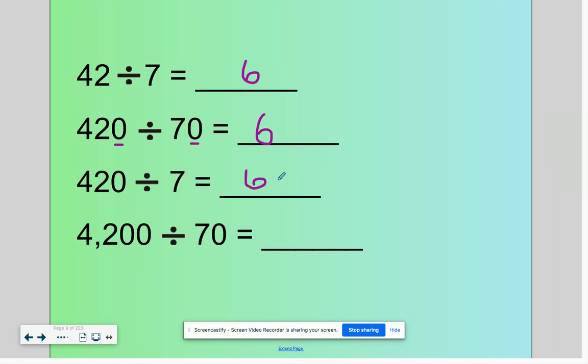But for this next problem our answer is 60. And our last problem, our answer is also 60. 6 times 7 is 42, one zero, one zero, and that gives us our two total zeros.